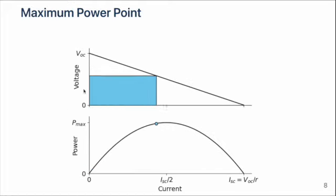We can understand this peak in power by looking at the graph of voltage versus current. Since the power delivered by the battery is equal to its voltage times its current, the power is equal to the area of a rectangle between the graph and the origin.